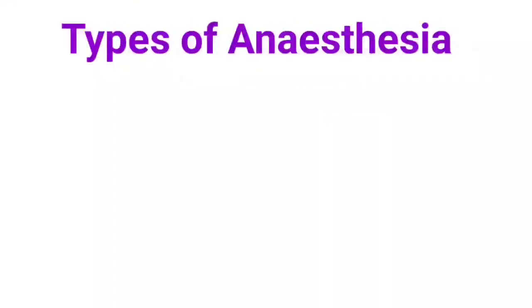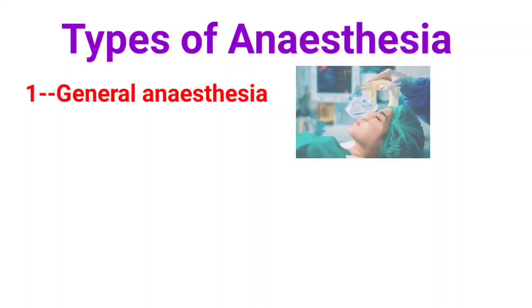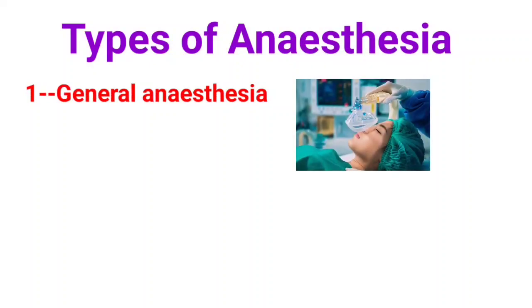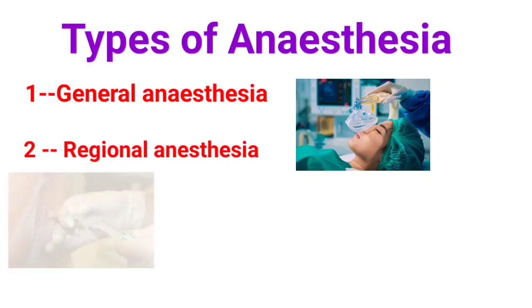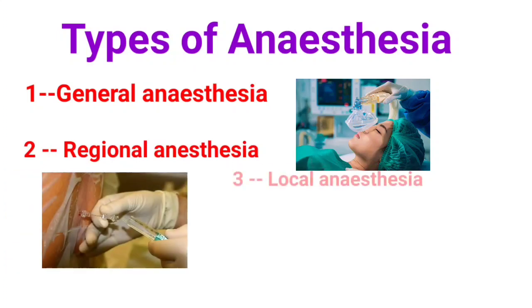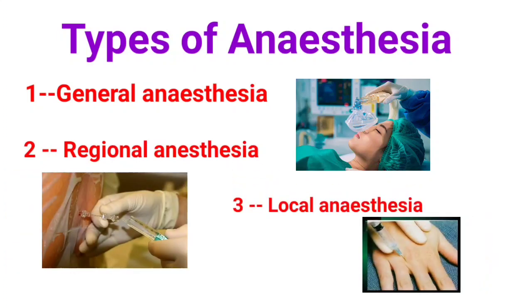There are three main types of anesthesia. The first one is general anesthesia, the second one is regional anesthesia, and the third one is local anesthesia.